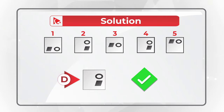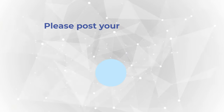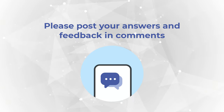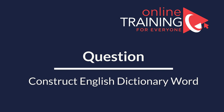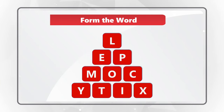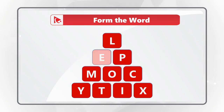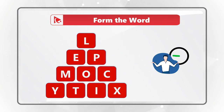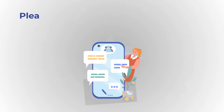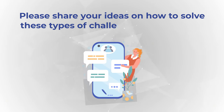Hopefully you've nailed this question and now know how to answer similar problems on the test. But in case you need more problems with solutions, please make sure to check out the description of this video. Here's the question for you to practice. You're presented with 10 letters — L-E-P-M-O-C-Y-T-I-X — and you need to form a word from the English dictionary using all the letters only once. The word somehow represents the fact that there are 10 letters. Please post your answer in comments. Thanks for participating and good luck.